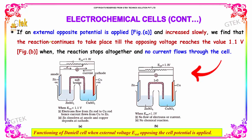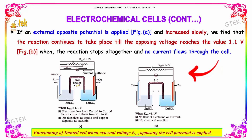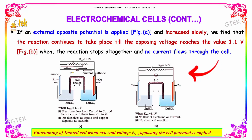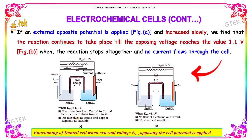If an external potential — an opposing potential — is applied and increases slowly, we find that the reaction continues to take place till the opposing voltage reaches the value of 1.1 volt. When the external voltage is less than 1.1 volt, the reaction continues: zinc dissolves at the anode and copper deposits at the cathode.